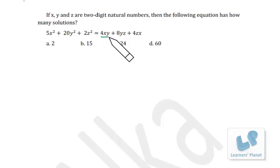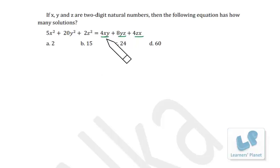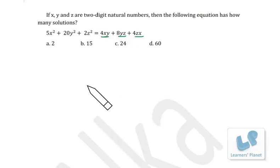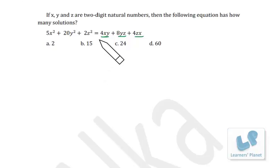Looking at the right-hand side we have 4XY, 8YZ, and 4ZX. Now, 4XY can be obtained if one term has coefficient 1 and another has coefficient 2, because when we square the sum of those terms, 2AB gives us 4XY.